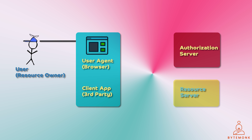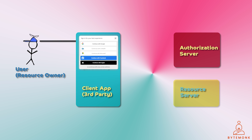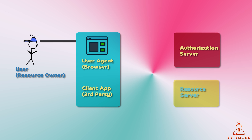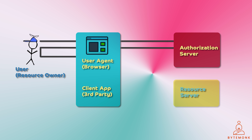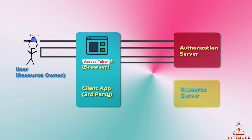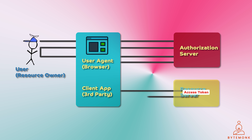The user visits the application website and clicks on a button to log in with Google. The application redirects the user to the Google authorization server. The Google authorization server asks the user to log in, enter their username and password, and click the allow button. Google then generates an access token and redirects the user back to the application's website. The application receives the access token, stores it in its database, and uses it to make requests to Google's APIs.